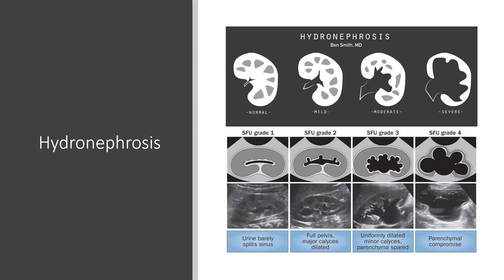In mild hydronephrosis, you can see blunting of the calyceal fornices and large calyces, but easily identified papillae. In moderate hydronephrosis, you see obliteration of the papillae with rounding of the calyces. In severe hydronephrosis, you can see extreme calyceal ballooning and thinning of the renal cortex.